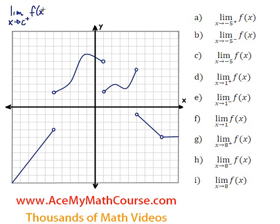Let's say I have something like this. The limit as x approaches c — there's a little plus here — means from the right of f. So we're not going to care about what's coming from the left. We're only going to look at, let's say, the limit as x approaches negative 5 from the right of f. Considering that these lines are basically just one function, but broken in several pieces.